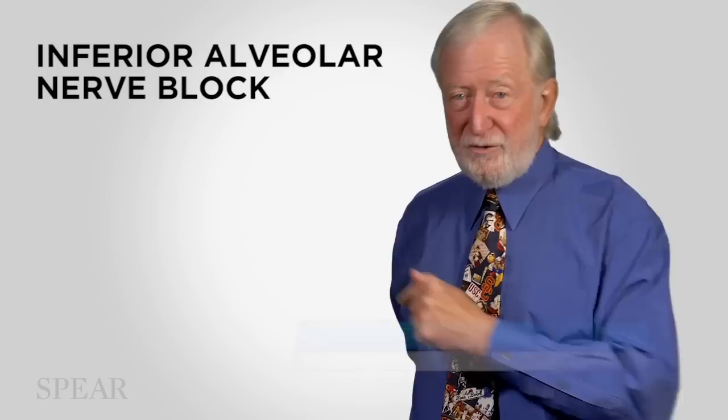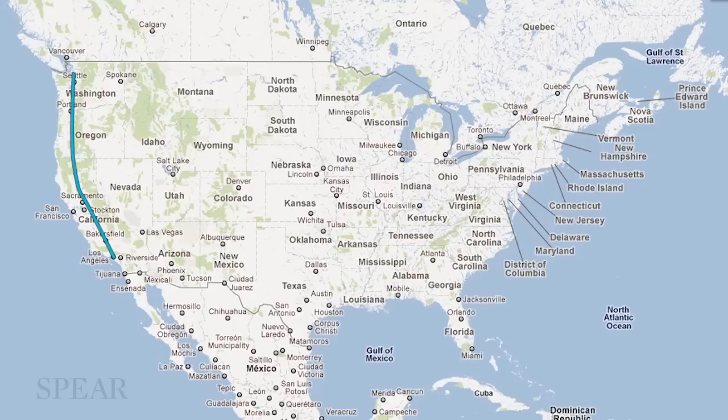Assuming that you're doing this injection, putting the barrel of your syringe in a corner of the mouth on the opposite side. There are other ways of doing it, but this is the traditional way of doing it. So if we go back to that diagram of the inferior alveolar nerve.